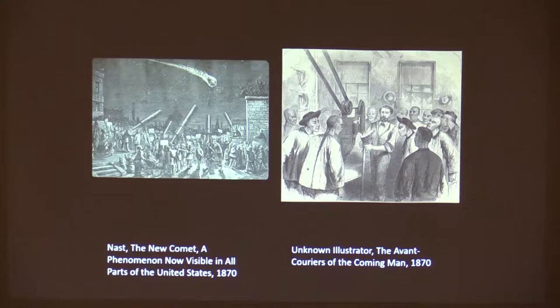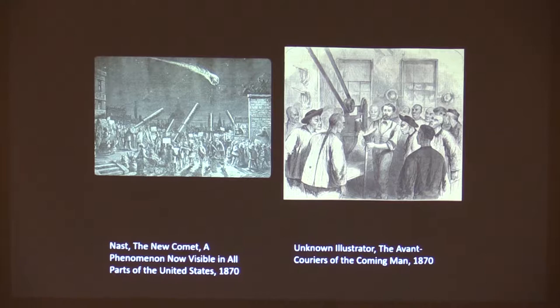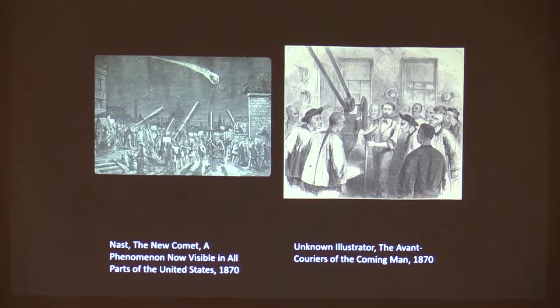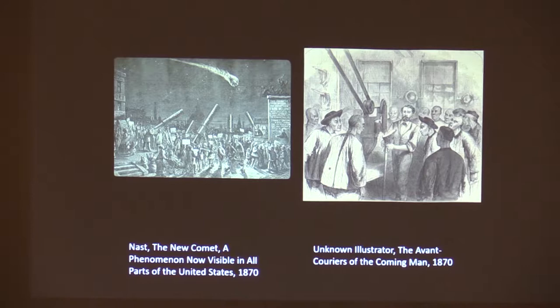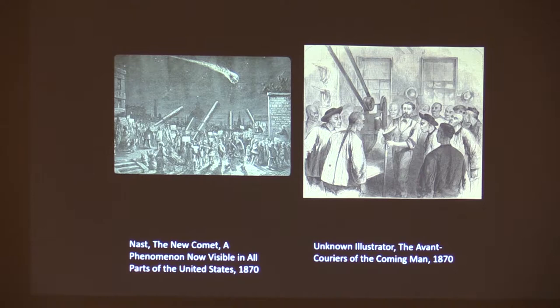If we look further into the visual culture associated with this moment, we see those two sides attending the arrival of the Chinese played out in more and more imagery, cartoons and caricatures. Over on the right, we might imagine this to be indicative of the factory owner's attitudes — all these Chinese laborers have shown up in Massachusetts, taking their place next to the machinery, in this case a bottoming tool in the shoe factory. And there is Calvin Sampson himself showing the Chinese laborers how to work on these factory tools. Over on the left, here's Thomas Nast: 'A new phenomenon now visible in all parts of the United States.' We can see a comet dashing across the sky with the face of a Chinese laborer, and behind it a tail with words: 'cheap labor.'